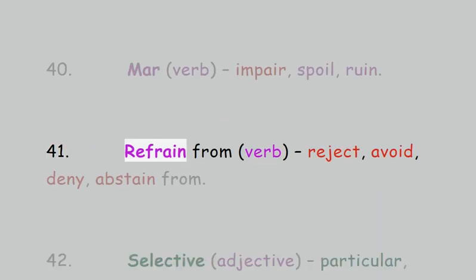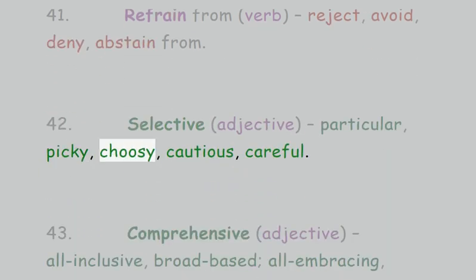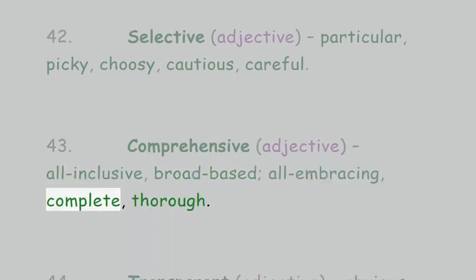41. Refrain from, verb: reject, avoid, deny, abstain from. 42. Selective, adjective: particular, picky, choosy, cautious, careful. 43. Comprehensive, adjective: all-inclusive, broad-based, all-embracing, complete, thorough.